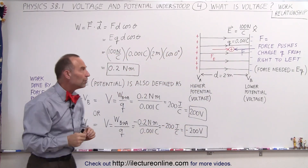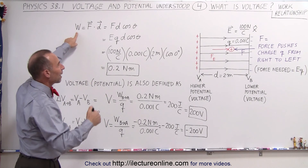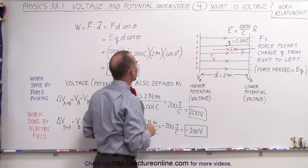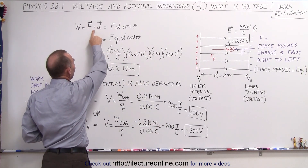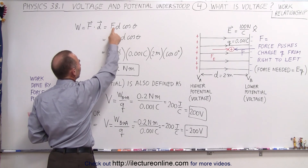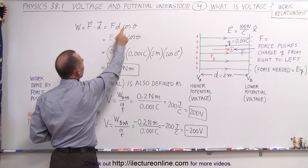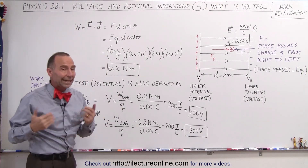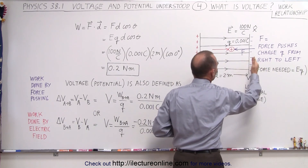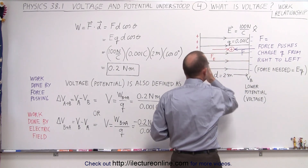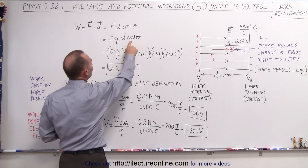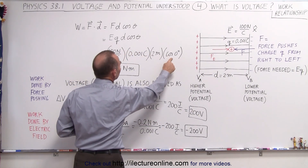What we're going to do now is find the work done by moving a charge from the right side to the left side. To do that, we multiply the force applied times the displacement — that's a dot product, so it's the magnitude of the force times the magnitude of displacement times the cosine of the angle between them. In this case, the direction of the force and the direction of displacement are the same, so the angle between them is 0, and the cosine of 0 is equal to 1.